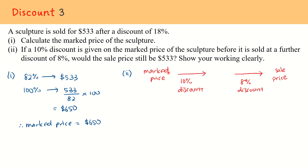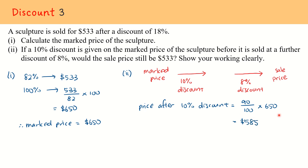In the very first part, since we know that the marked price is $650 already, to find out the price after the 10% discount, that will actually be 90% left. So 90% of the marked price gives us this value. The price after 10% discount is 90 over 100 times $650, which gives us $585.